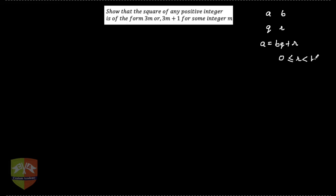This condition holds where 0 is less than or equal to r, which is less than b. Using this lemma, let's look at our question. The question says: show that the square of any positive integer is of the form 3m or 3m plus 1.